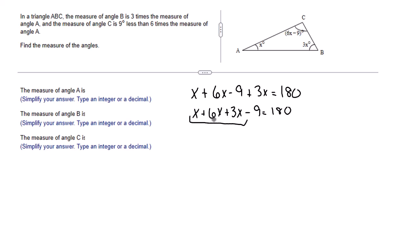X plus six X is seven X. Seven X plus three X is 10 X. So we have 10 X minus nine equals 180.